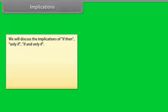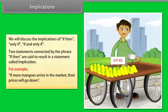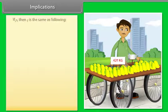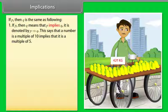Implications. We will discuss the implication of if-then, only-if, and if-and-only-if. Two statements connected by the phrase if-then result in a statement called an implication. For example: 'If more mangoes arrive in the market, their prices will go down.' If P then Q means that P implies Q, denoted by P ⟹ Q. For example, a number being a multiple of 10 implies it is a multiple of 5.